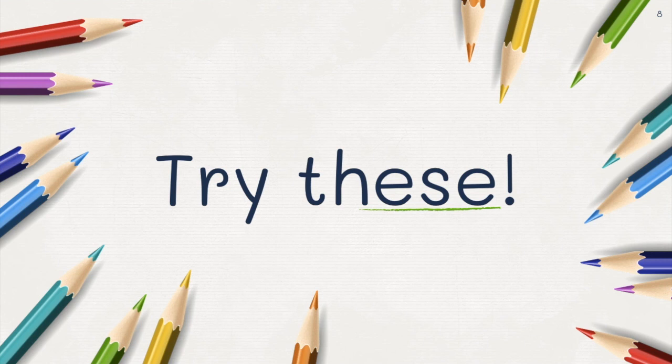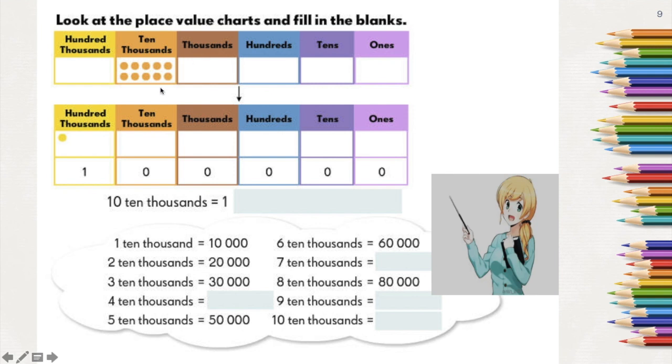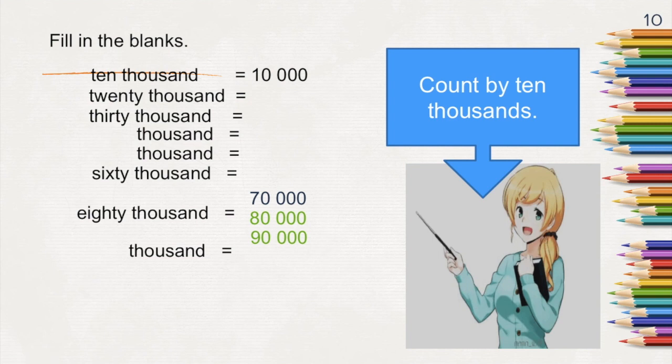Now, let's try answering more exercises. Here, in our place value chart, we have 10 ten thousands. So, let's try to find out what is it equal to by counting: 10,000, 20,000, 30,000, 40,000, 50,000, 60,000, 70,000, 80,000, 90,000. So if we have 10 ten thousands, we have 100,000. So 10,000 more than 90,000 is equal to 100,000. This is your turn now to count on your own by 10,000.